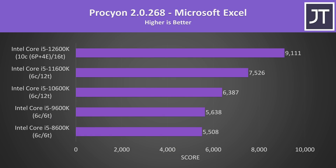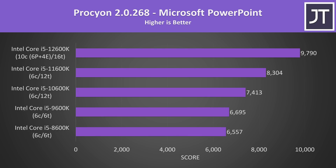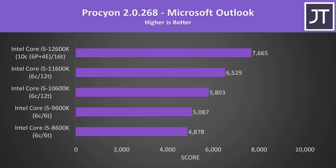For office tasks, this is essentially the new PCMark and covers Microsoft Excel, Word, PowerPoint and Outlook. The general trend is that 12th gen offers the biggest boost compared to previous generational jumps.